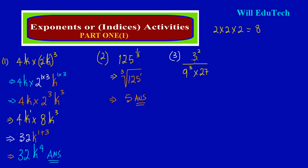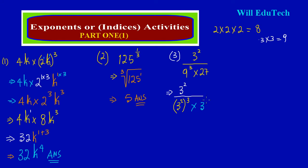If you look carefully, you'll realize all three numbers share a common base of 3. So I can simply rewrite this: in my numerator I have 3 squared, and that is all over my denominator. Nine is the same as 3 times 3, so I could rewrite 9 as 3 squared. But remember, 9 was raised to the power of 3, so I have to raise that to the power of 3 as well, and that is multiplying. And 27 can also be rewritten as 3 cubed.